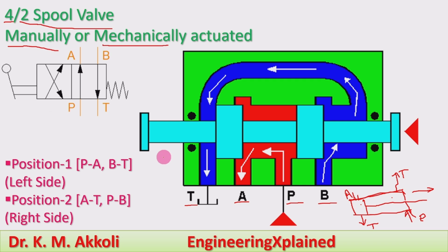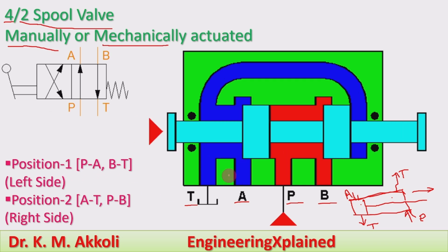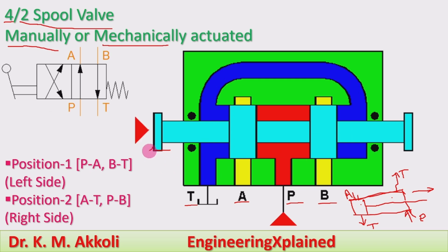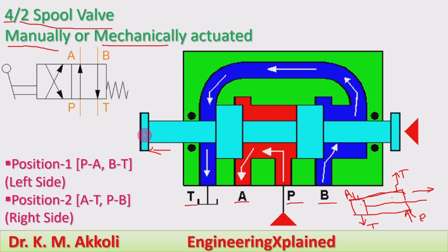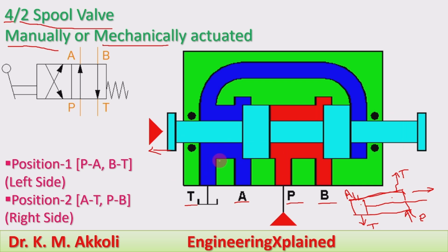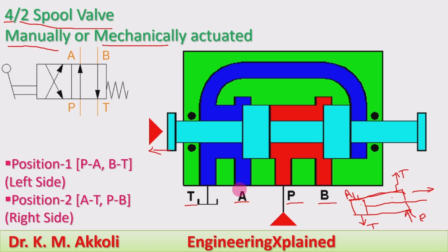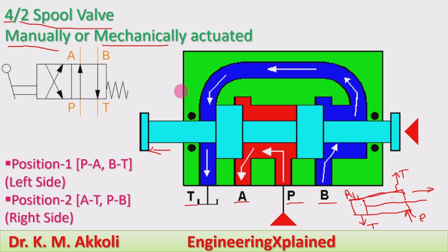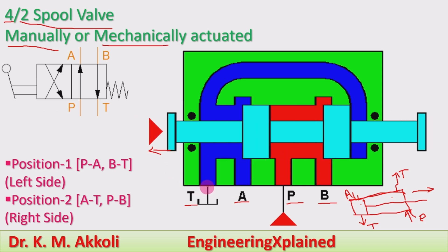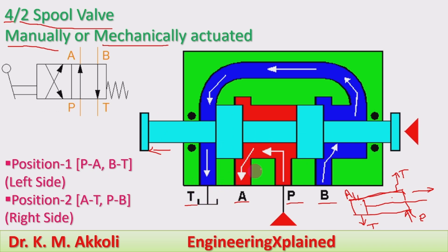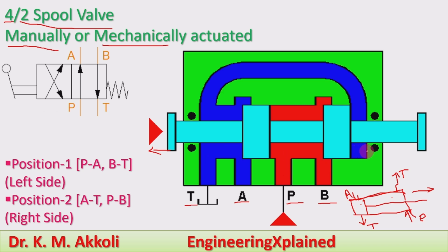Now let us look at the two positions. Position one is the left side. When the spool is in the left-hand position, it is called position one. During that time, the pump port (P) is connected to the actuator port (A), and the back port (B) is connected to the tank (T) — so P to A and B to T.